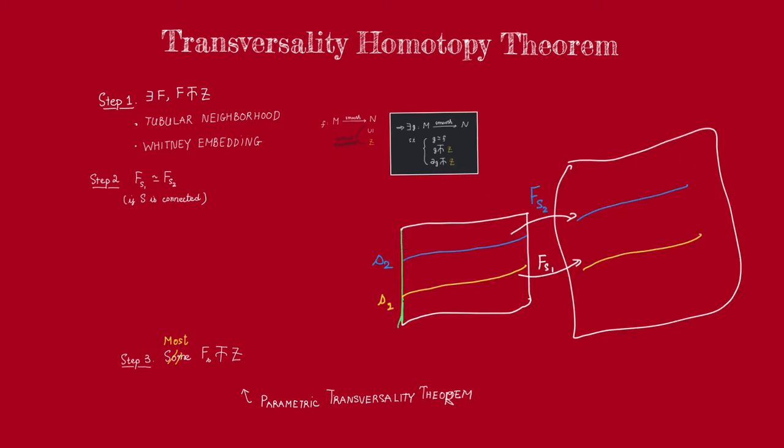So let's assume that S is connected. And let's take two members of this family. Say we take the map FS1 and FS2, and let's show that they are homotopic.